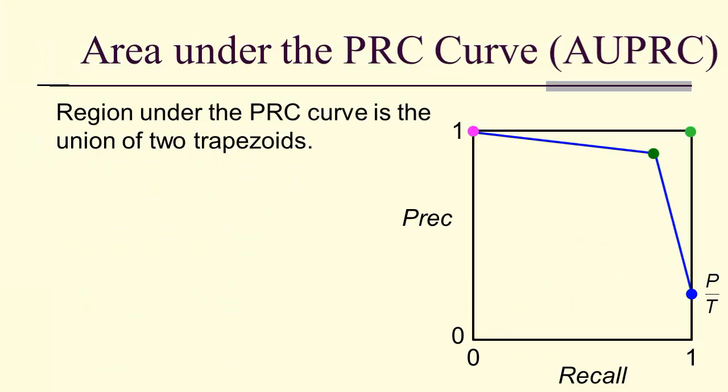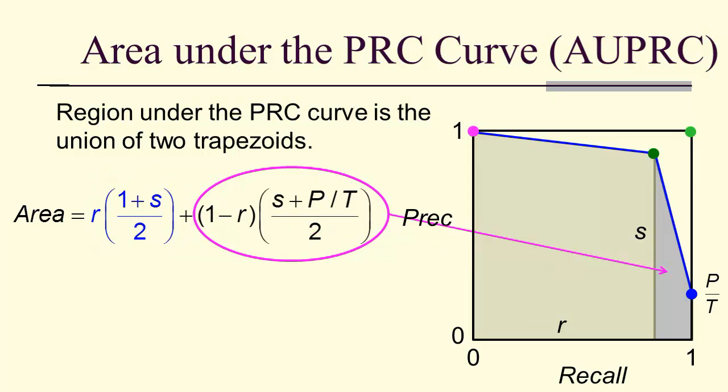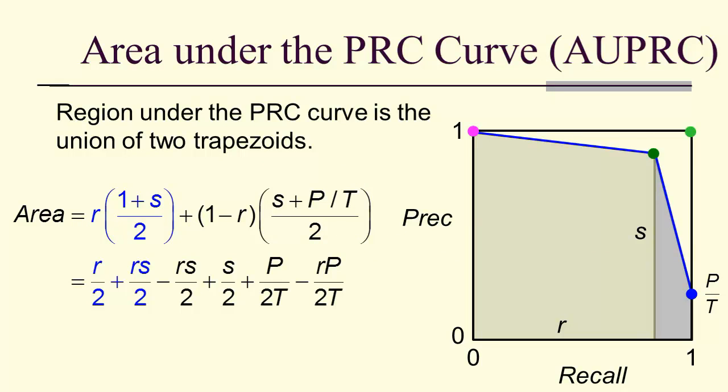There is a region under the PRC curve, the union of two trapezoids. The first has an area, the average length of the sides times the base, and again for the second trapezoid. Expanding everything out, we notice that we're going to get some cancellation. We end up with the area R plus S over 2 plus P over 2T, 1 minus R.